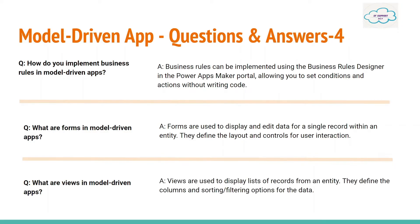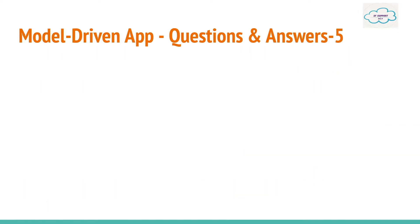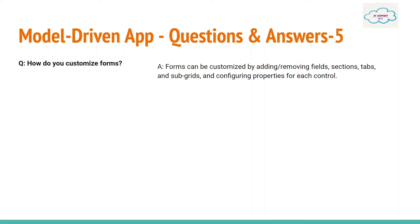Next question: What are views in a model-driven app? Views are used to display a list of records from an entity. They define the columns, sorting, and filtering options for the data — essentially a user interface where entity records can be displayed.